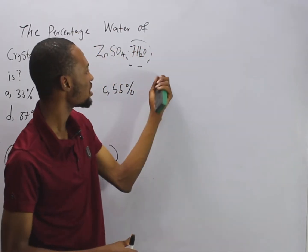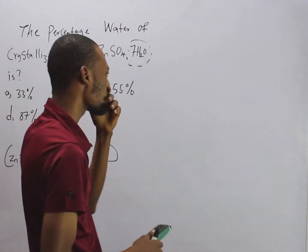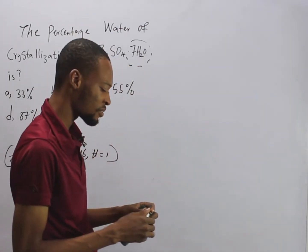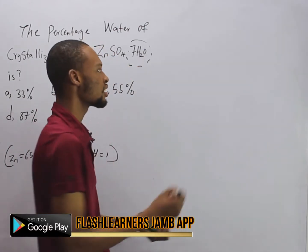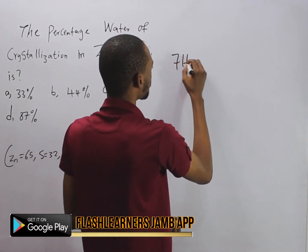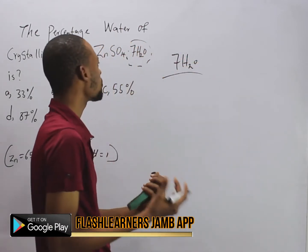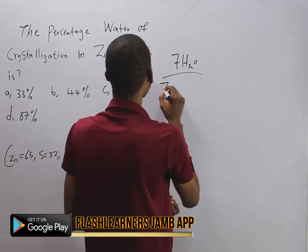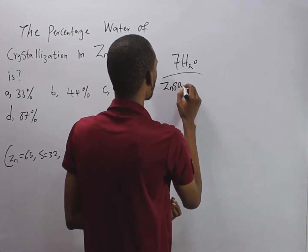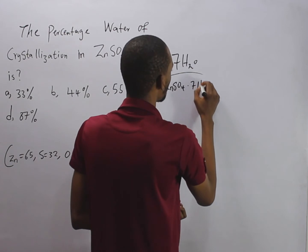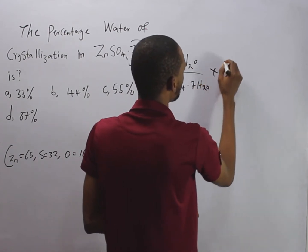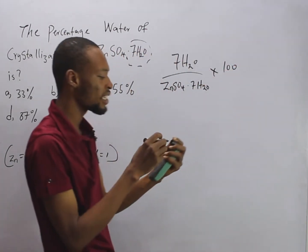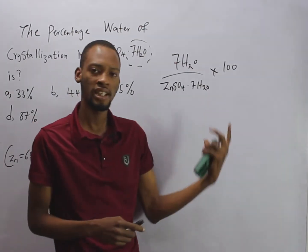To find this, we simply say that the percentage water of crystallization is the mass of water over the total mass—that means the mass of the full compound ZnSO₄·7H₂O—times 100. So this is the formula for the percentage water of crystallization.